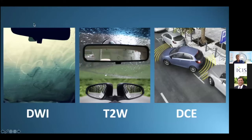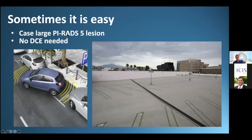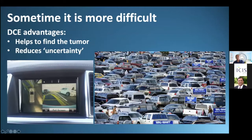Diffusion-weighted imaging shows the velocity of water molecules; T2 shows anatomy; and DCE helps you guide your car into the parking lot. For large PI-RADS-5 lesions it is easy — you don't need DCE and don't need much expertise to park your car. However, when you have a complex parking lot, you need a park-assist system, and then you do need to use contrast.